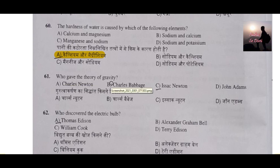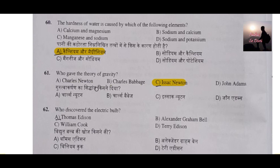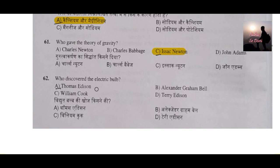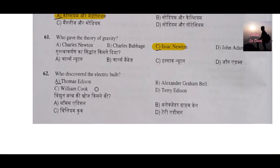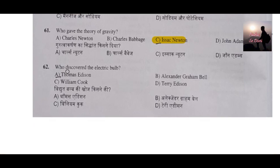Question number 61: Who gave the theory of gravity? Very easy question — Isaac Newton gave the theory of gravity. Question number 62: Who discovered the electric bulb? Also very easy — Thomas Alva Edison discovered the electric bulb.